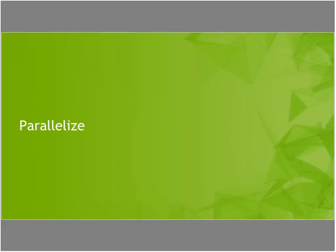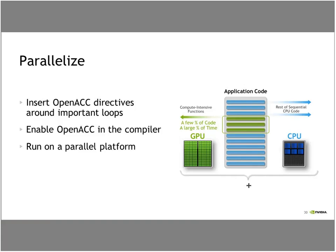We've done our analysis and understand where time is being spent. Now let's begin to parallelize our code. The parallelize step involves inserting OpenACC directives applied to the most important loops. We've identified the loop nest inside MATVEC as one of the important loops. We also need to enable OpenACC in the compiler to build for a GPU, and then run on a parallel platform — in this case an NVIDIA GPU.